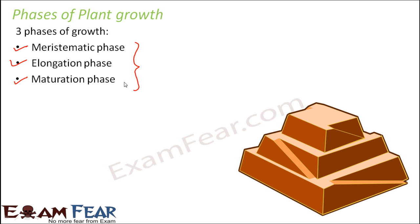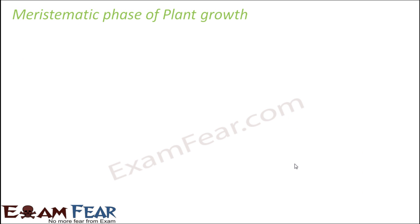So these 3 phases of growth come in this order: first is meristematic, next is elongation, and the last one is maturation. Let us discuss each of these phases in detail.